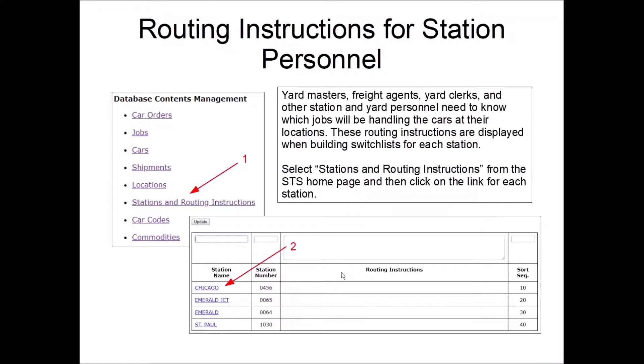Once you have the jobs identified that will be running on your railroad, now you can go to each station and add the instructions that will tell the yard clerks, the freight agents, to which trains the cars will be assigned.